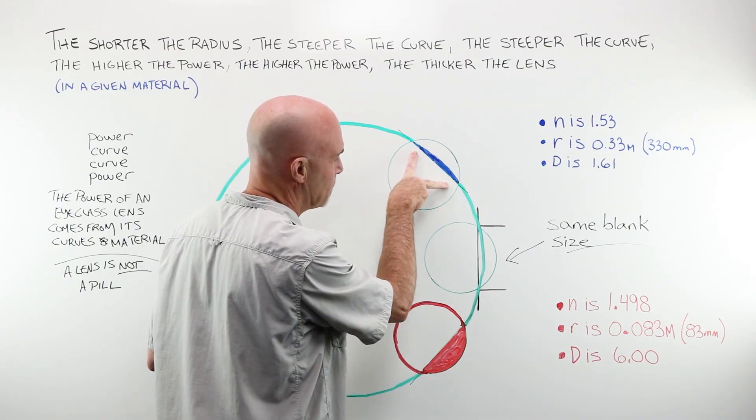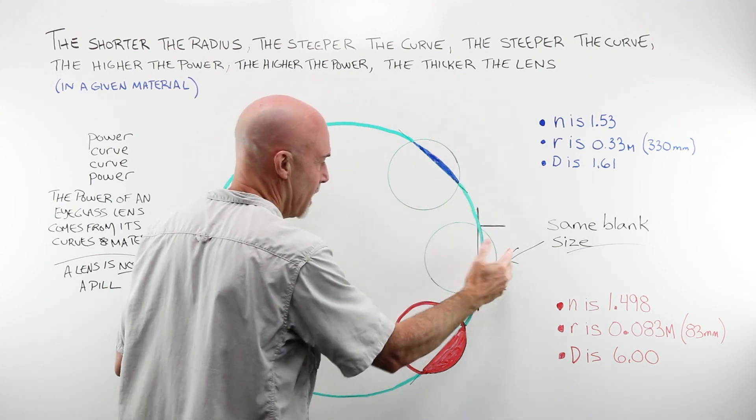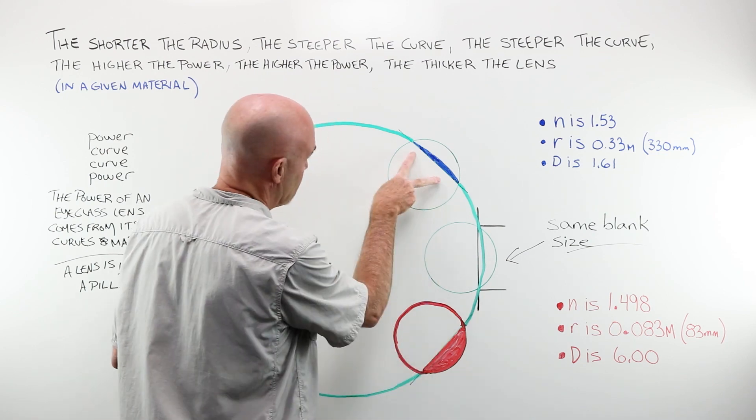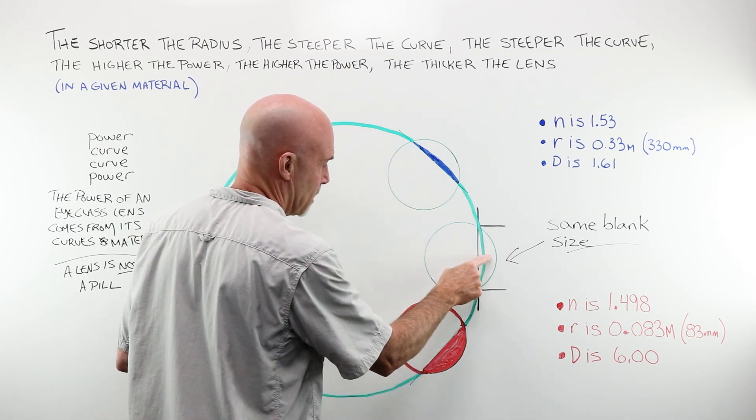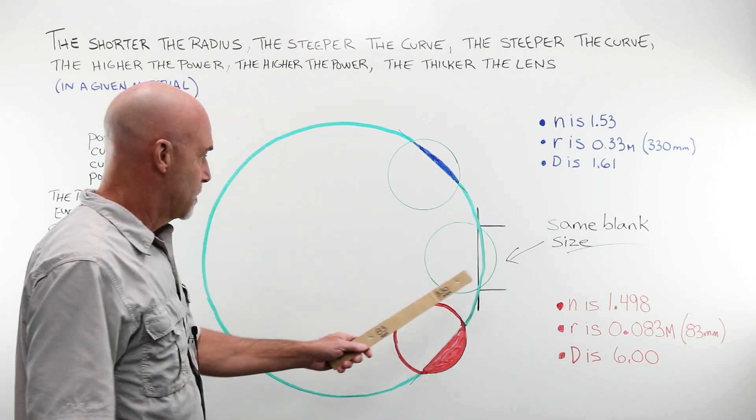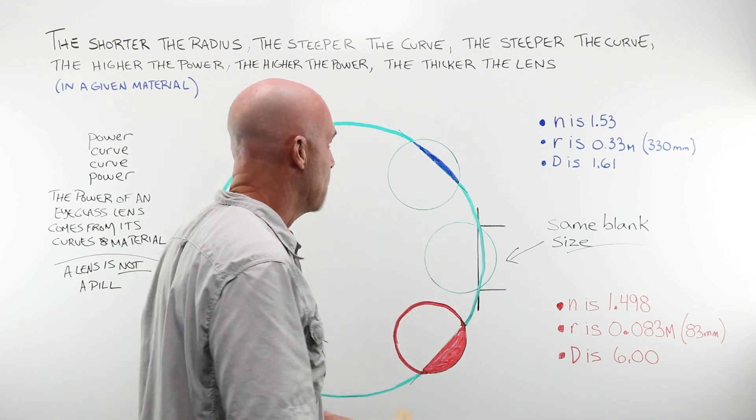But they are of the exact same equal blank size. The cord, this plano line that we cut out and removed as a lens, they're exactly the same. There are my two lenses, both working from the same diameter. Because the steeper radius, stronger power. Again, you should be familiar with that.